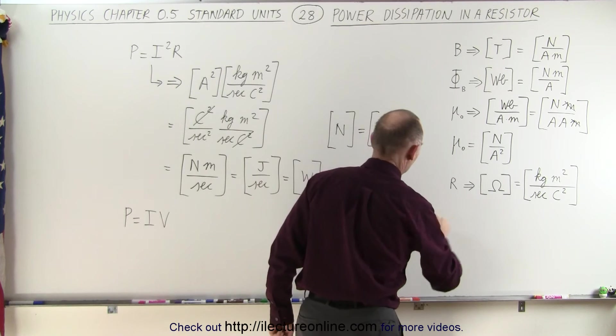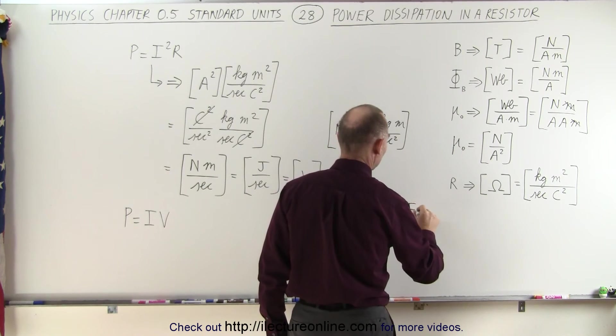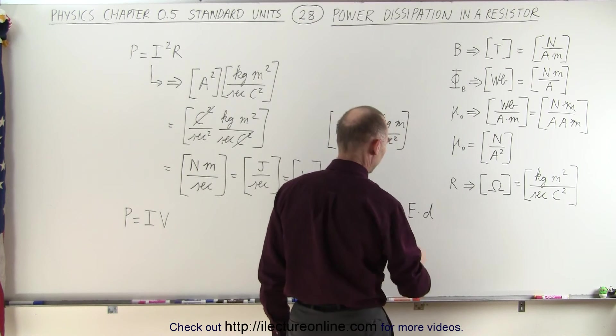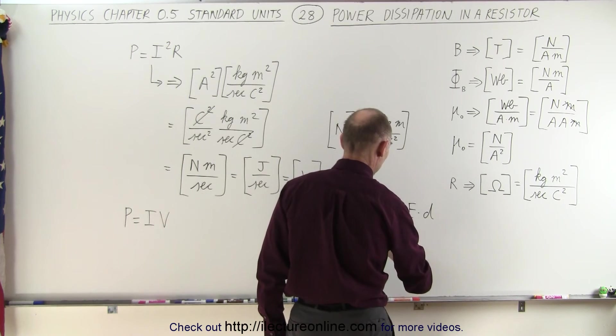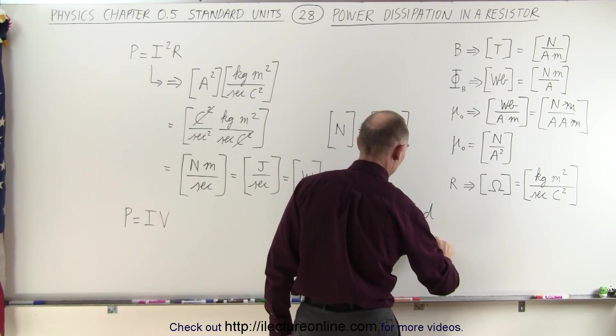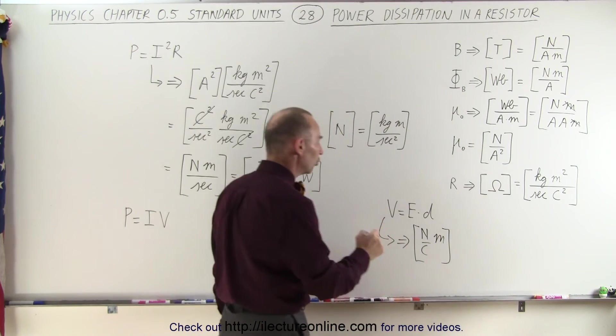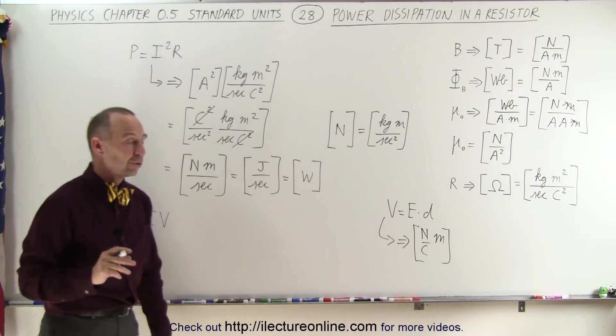Now, the definition of voltage, voltage can be defined as being equal to the electric field times the distance traveled through the field, and so therefore the units for voltage is equal to the units for the electric field, which is newtons per coulomb, and the distance would be equal to meters. So newton per coulomb times meter is the units for voltage.